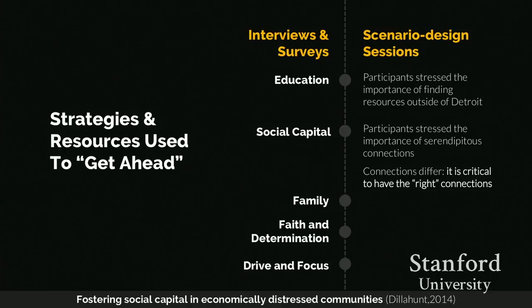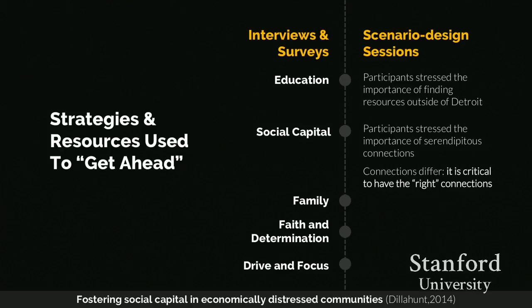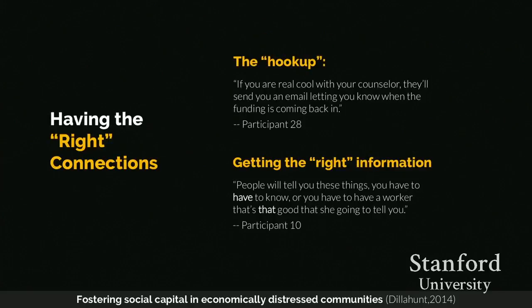Strategies to get ahead from our interviews, surveys, and scenario sessions included getting an education. Our scenario sessions revealed that participants felt they needed to access support outside of the city — many said the resources aren't in Detroit, they have to go outside the city. Participants also raised the notion of social capital, saying they needed connections to others to understand how to get ahead. Critically, participants noted that connections differ — it's important to have the right connections, and not having them was seen as a barrier.